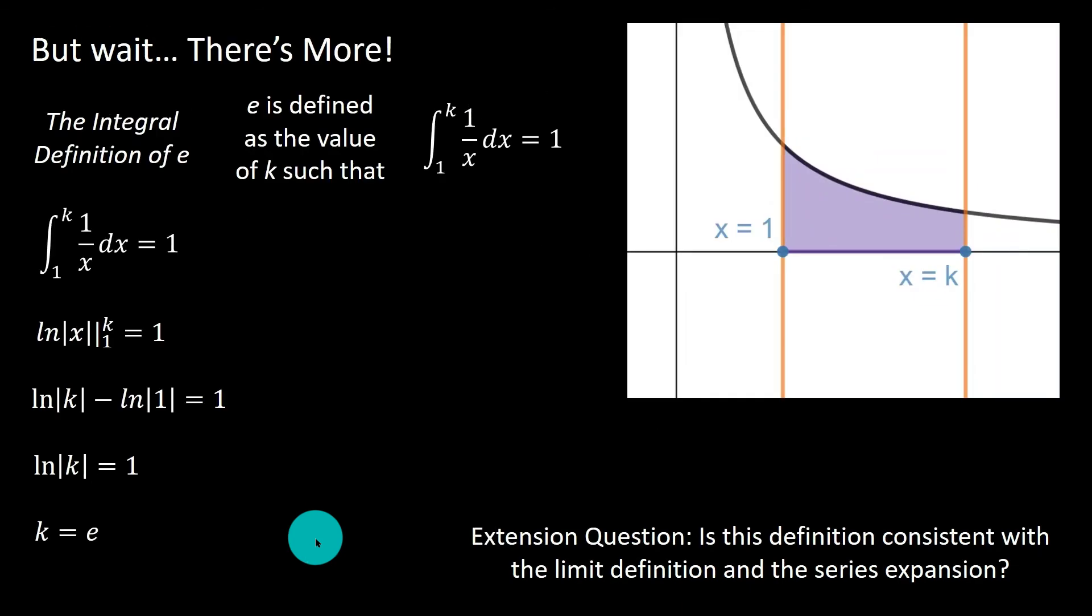Moving forward, there is one additional definition of e to the x using the integral. So you could also define e as the value of k such that this integral is satisfied. In other words, that this purple region has an area of 1 if k is e. And that's easy to show. You just take the antiderivative of 1 over x, which is the natural log of absolute value x, evaluated from 1 to k. And when you get k minus natural log 1, natural log 1 is 0, which means natural log k is 1, and therefore k is e.